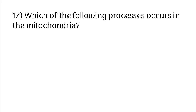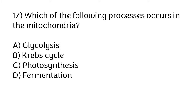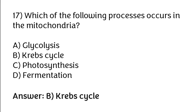Which of the following processes occurs in the mitochondria? Options: glycolysis, Krebs cycle, photosynthesis, fermentation. The correct answer is option B — the Krebs cycle occurs in the mitochondria.